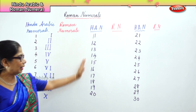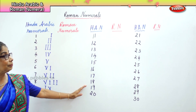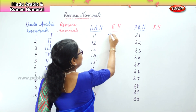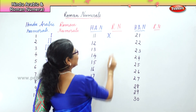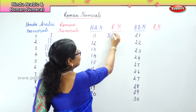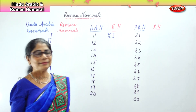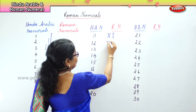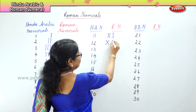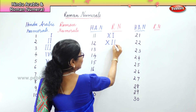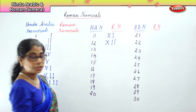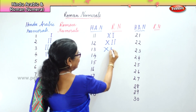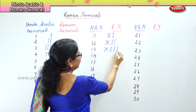Now we build on Hindu-Arabic number eleven to twenty. We already know ten. So you put one more, you get eleven. Next you have twelve: ten and two more. So ten, eleven, twelve. Similarly thirteen: ten, eleven, twelve and thirteen.